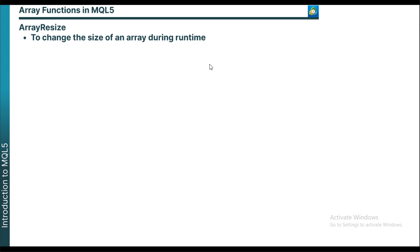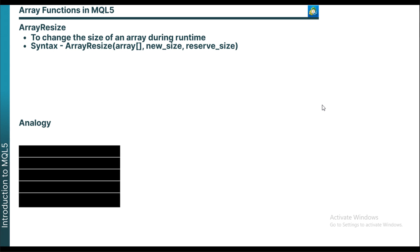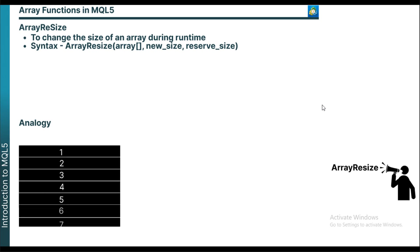At a point in your code, you can decide you want the size of an array to be a certain value, and at another point you can change it again. The syntax includes various parameters: the array name, the size which is the new size you want the array to be, and the reserve size which you can ignore if you want. Imagine you have an array where you can store five numbers — ArrayResize is like magical words you can say, and the size of the array will increase or decrease at any point in your code.